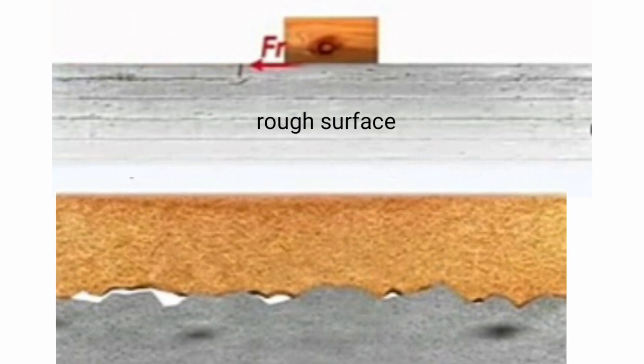When an object moves on a rough surface, the speed of the object slows down and finally comes to rest. When you observe the contact between two surfaces, you see that there are many irregularities on it.